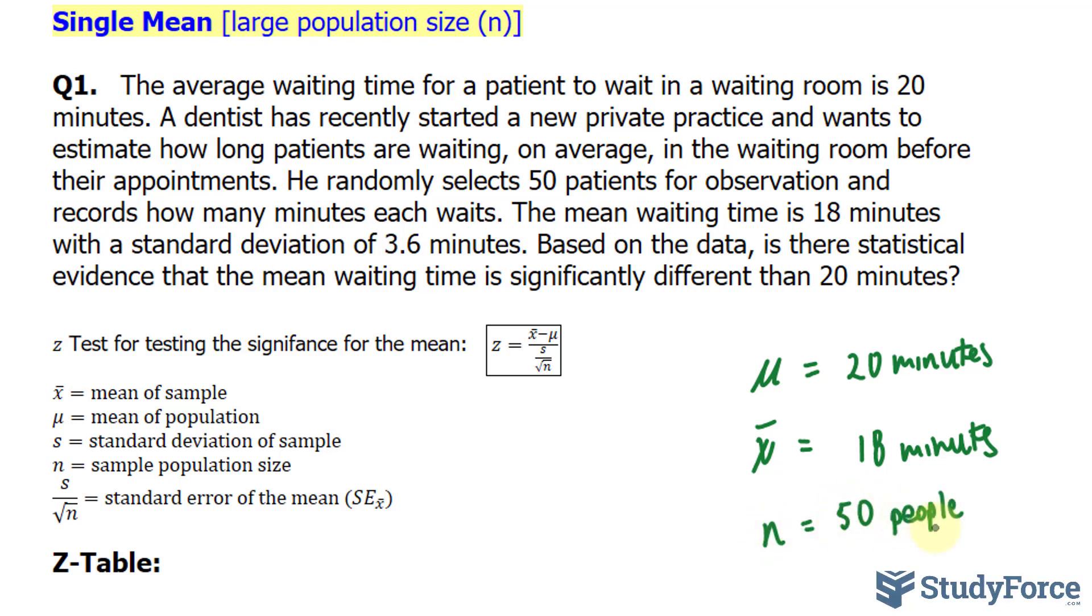The standard deviation for the sample is 3.6 minutes. For a sample's standard deviation, we use the letter s. That's 3.6. However, we would use σ if it was the standard deviation of the entire population, which we don't have and we don't need.